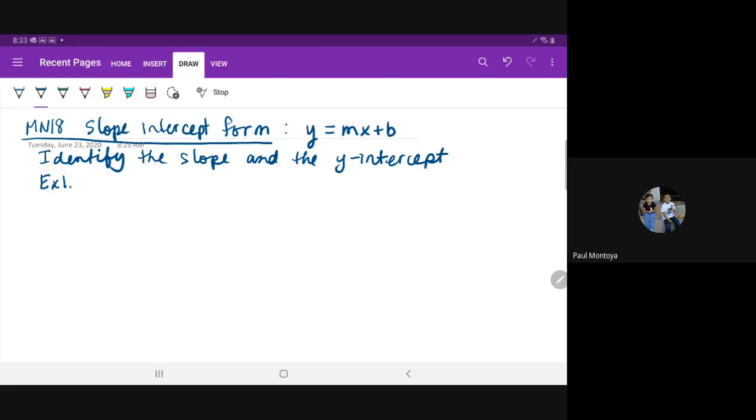Let's see when she comes back. Okay, so this is M18 slope intercept form, which is called y equals mx plus b. I did identify the slope and the y-intercept.